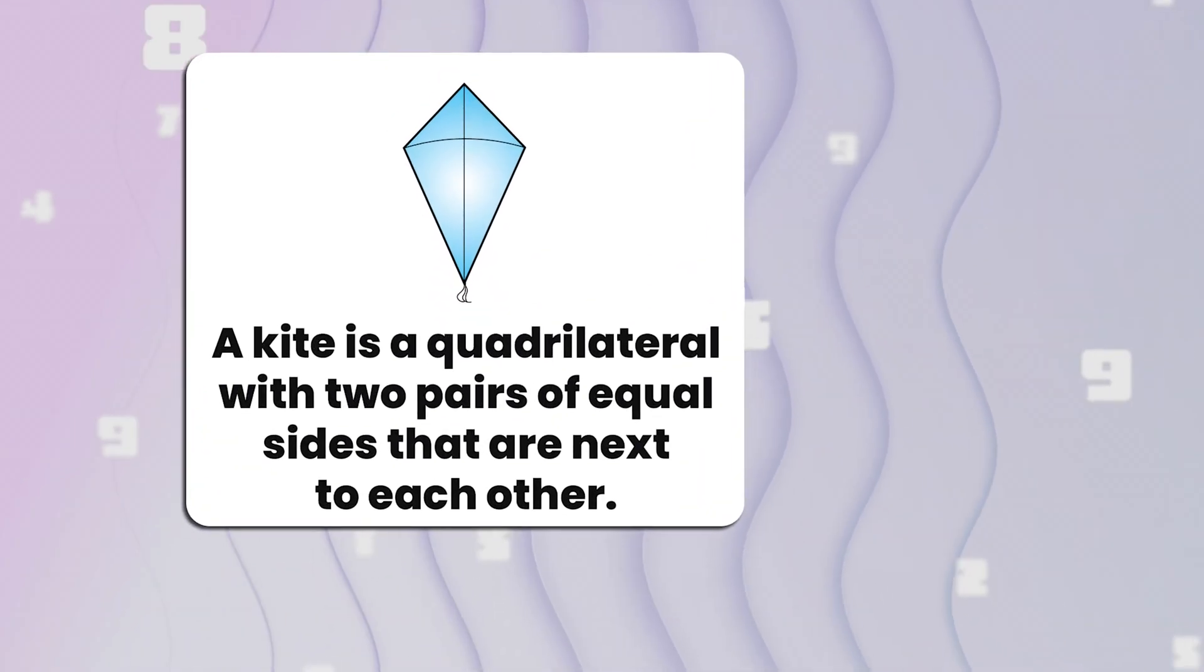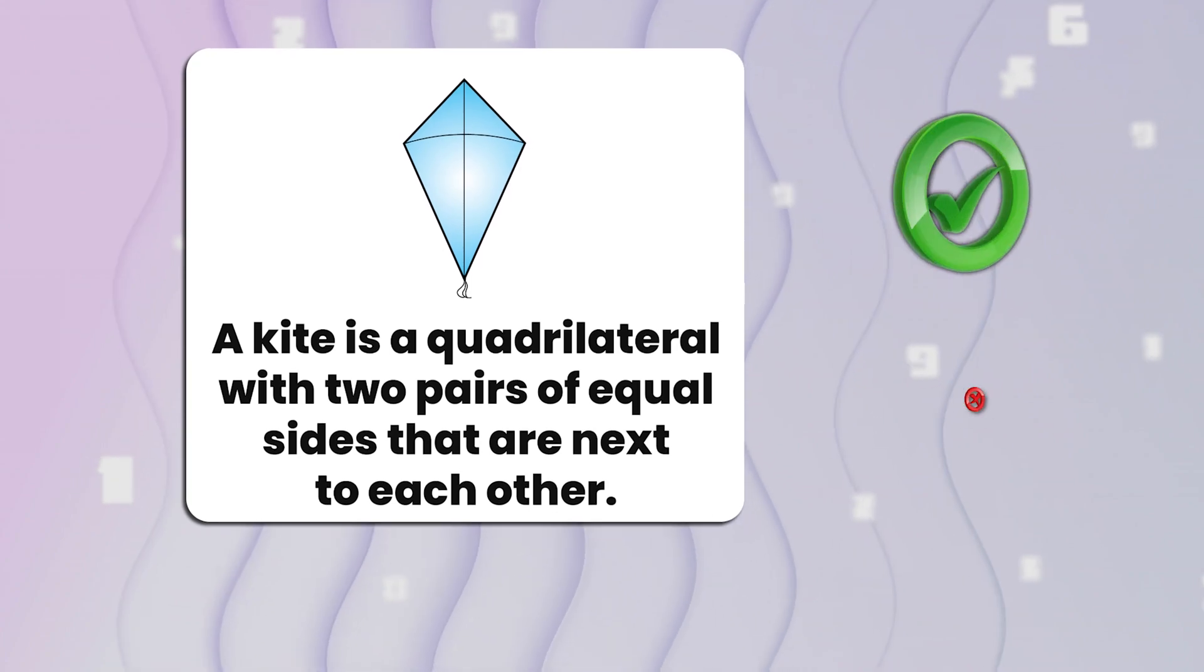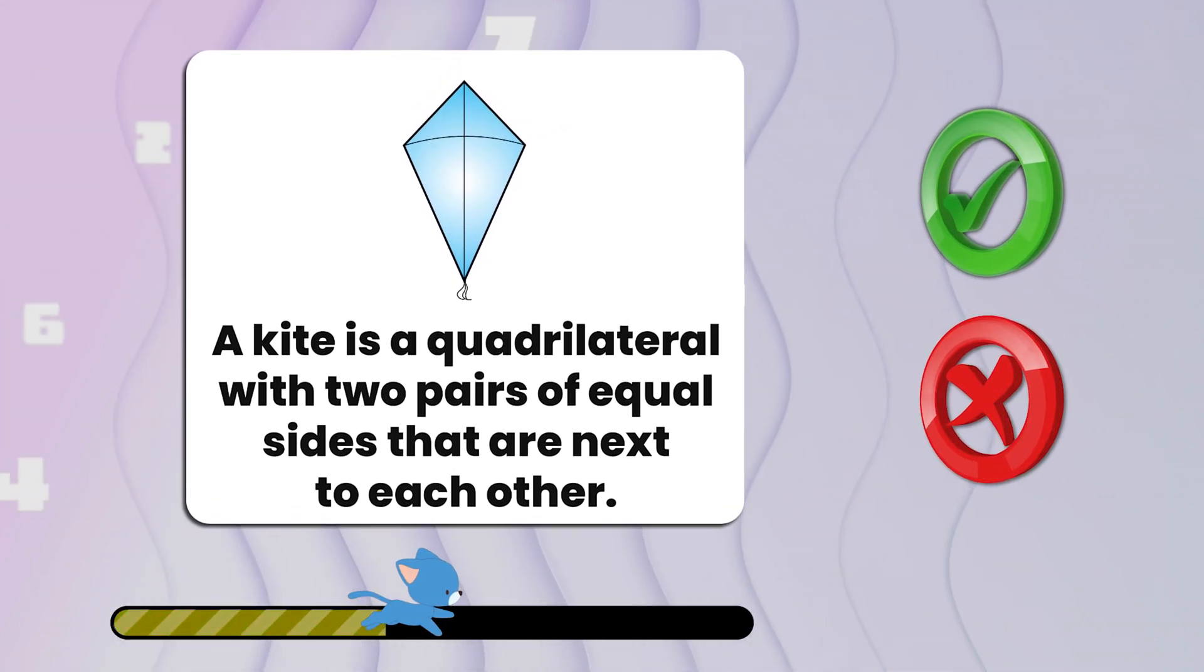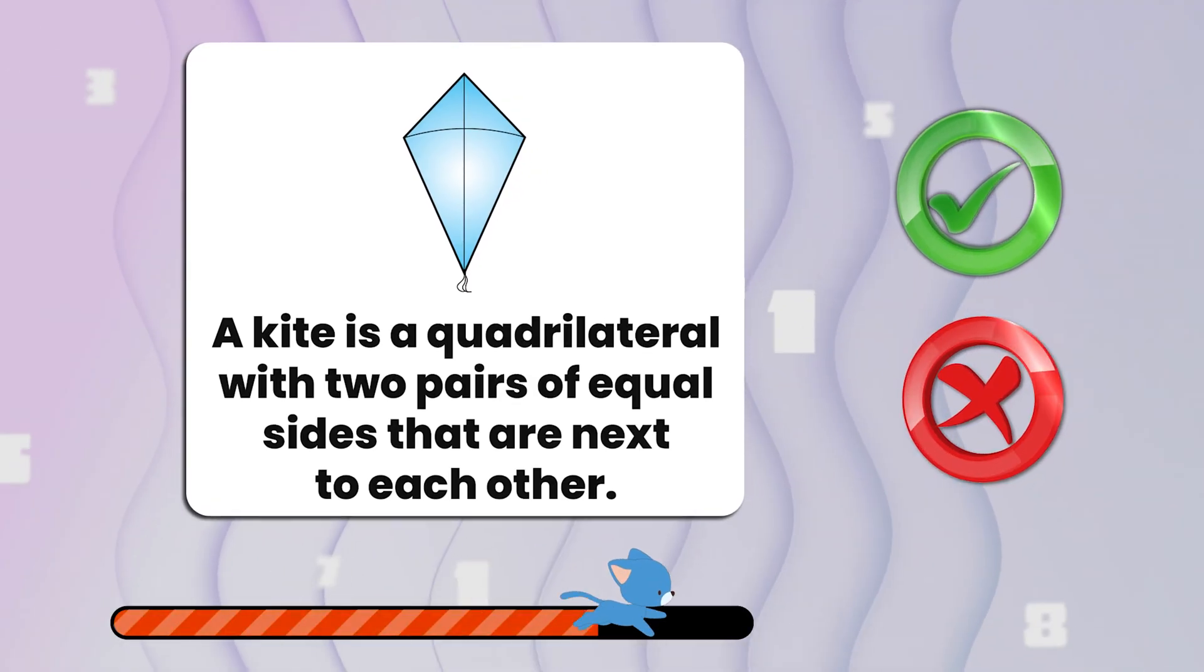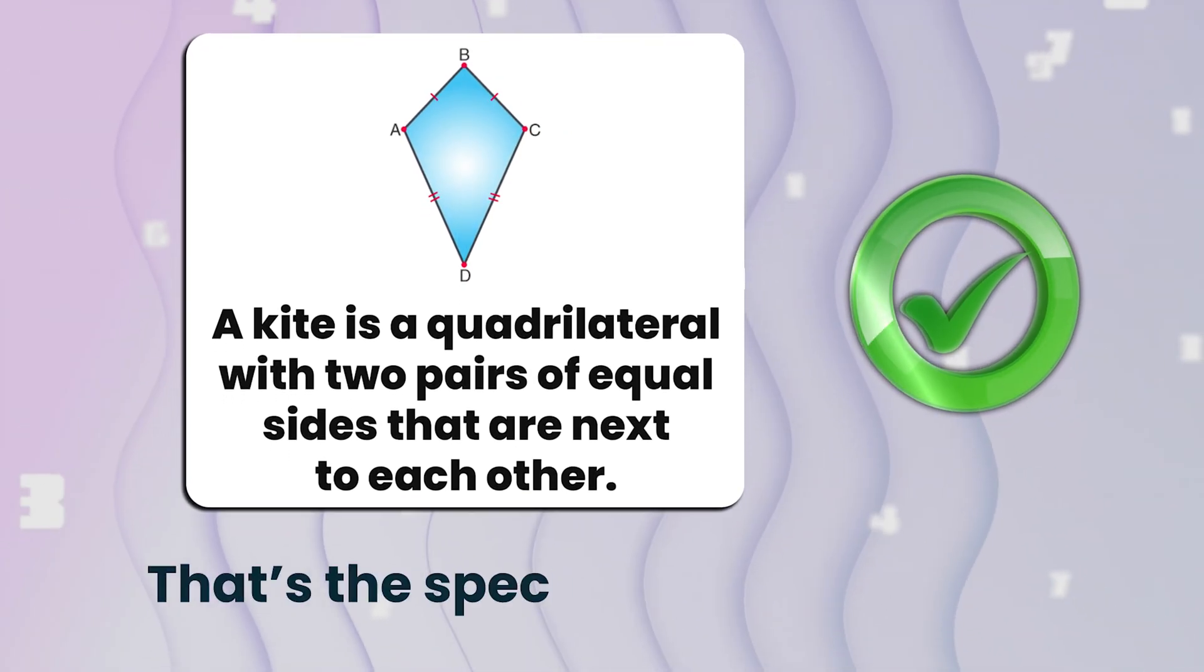Number seven. A kite is a quadrilateral with two pairs of equal sides that are next to each other. True or false? That's true. That's the special feature of a kite.